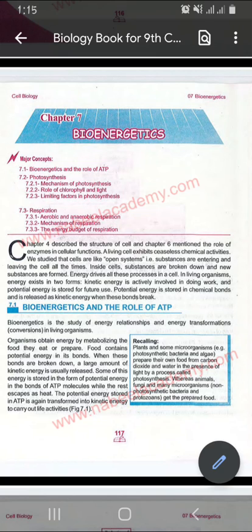In the cell, there are two types of chemical reactions, which we call metabolic reactions. In the cell, there are some substances that are larger molecules, and some substances that are broken down into smaller molecules. Energy drives all these processes in a cell — all chemical processes in the cell require energy.